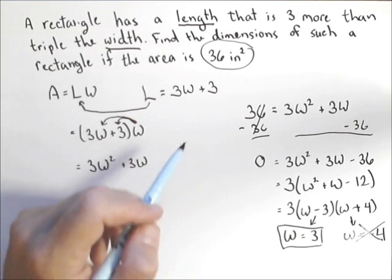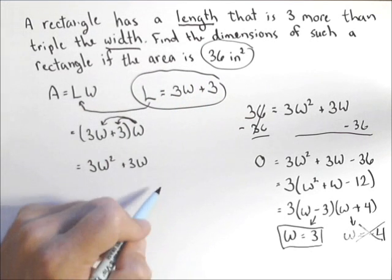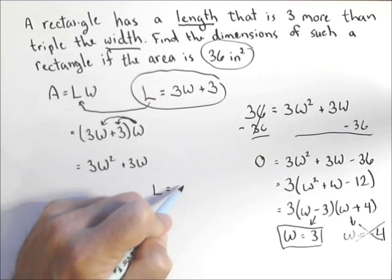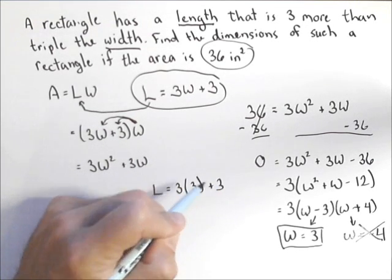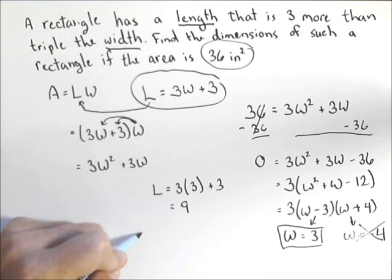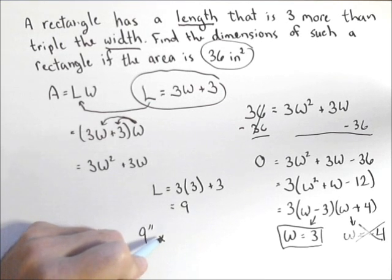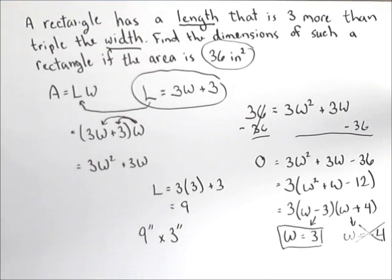Now we also have to go back and find L. Remember, we already have a relationship between L and W that we found earlier. So the length is equal to three times the width we found plus another three or nine. So the dimensions of this rectangle are nine inches by three inches. And that's how we can use a quadratic to solve this problem.